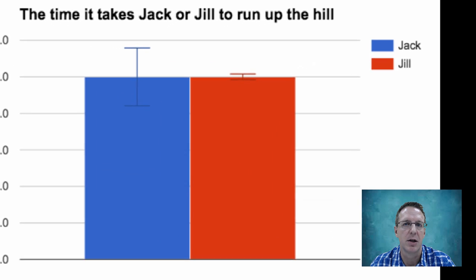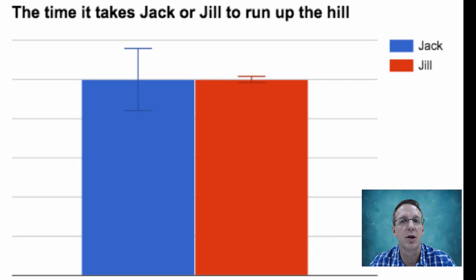One way to do that is to plot the standard deviation. So, when you do that, you can see instantly that there are differences between the two data sets despite the identical means. Jack clearly has a high variation in his data, and Jill does not.